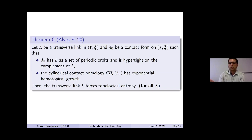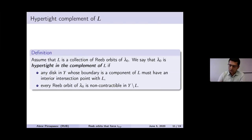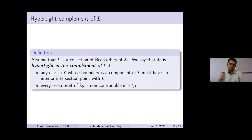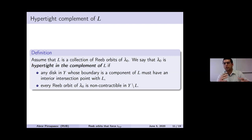Now I give the definitions of hypertight and exponential homotopical growth. For hypertightness, we assume L is a set of periodic orbits and λ is hypertight in the complement of L. The first condition is that any disk in Y whose boundary is a component of L must always have interior intersection with L. The second condition is that every Reeb orbit of λ₀ is non-contractible in the complement of L. These two conditions help with bubbling-up analysis: if these hold, there is no bubbling, because any bubble would have positive intersection with L.